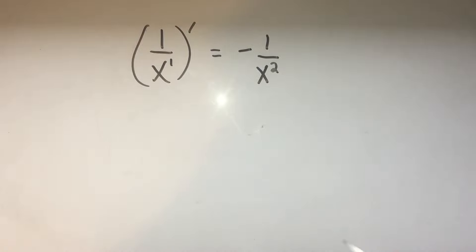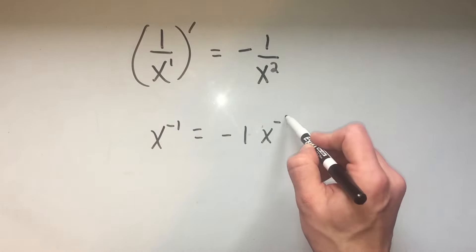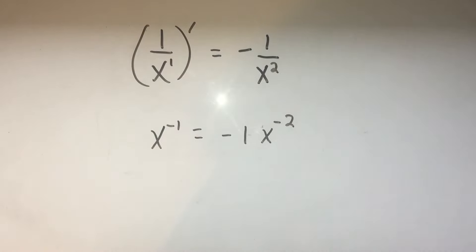So the old way you would have done this is you would have written one over x as x to the minus one, and then used the power rule, and you'd get minus one times x to the minus two, which is the same thing as I have written above.